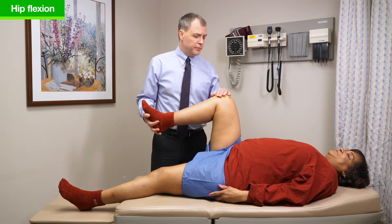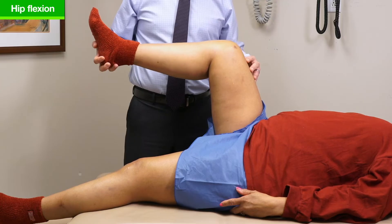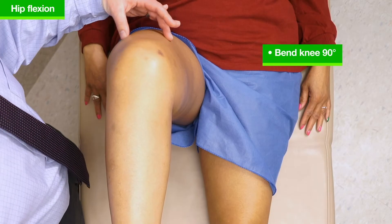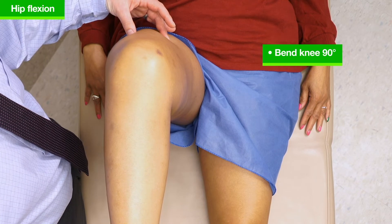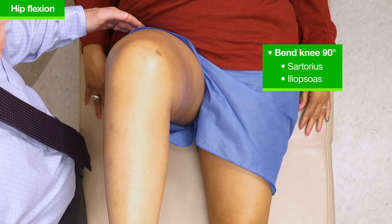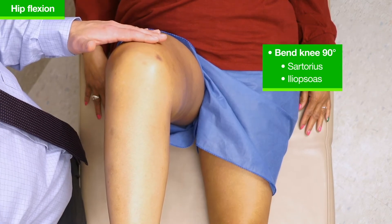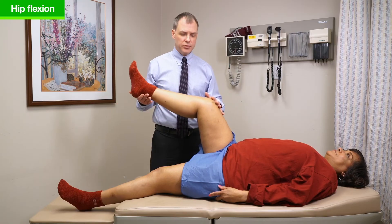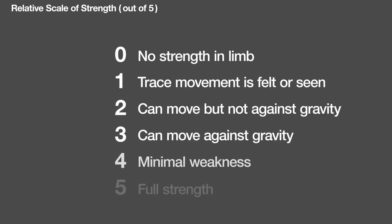Next we're going to check for hip flexor strength. To isolate away from the rectus femoris, keep the knee bent at 90 degrees, which isolates the sartorius and iliopsoas. She has 5 out of 5 strength. For reference: 0 out of 5 indicates no strength, 3 out of 5 means the patient can move the limb against gravity alone, 4 out of 5 indicates minimal weakness, and 5 out of 5 is full strength.